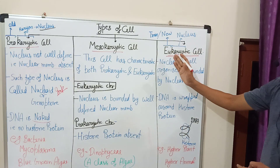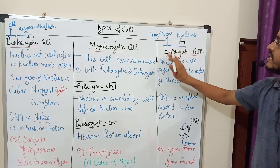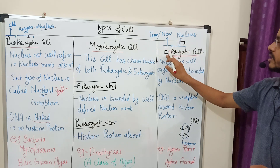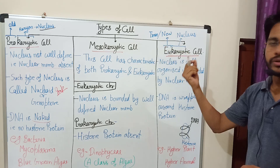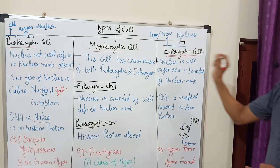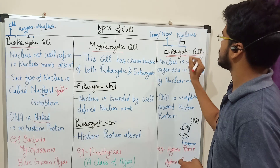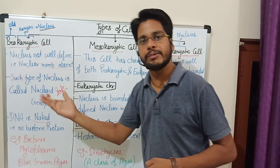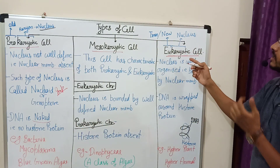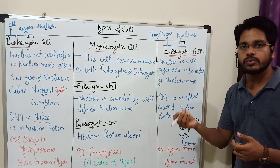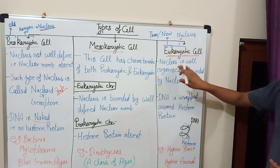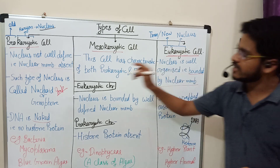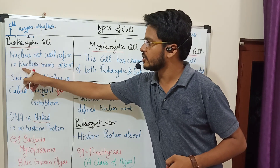Now we discuss eukaryotic cells. 'Eu' means true or new, and 'karyon' means nucleus. So eukaryotic cells have a true or new nucleus — the nucleus is well defined and well organized, meaning it is bounded by a nuclear membrane.